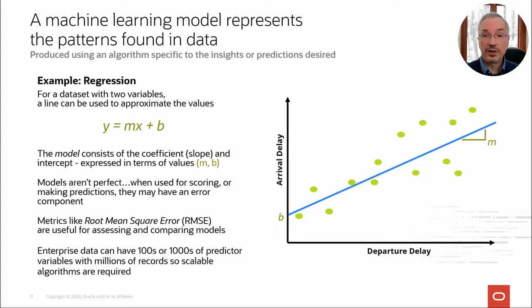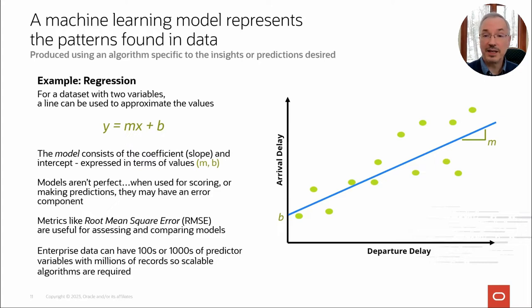Models often contain metadata like the names of variables and model quality metrics. Minimally, these values M and B could be stored in a file and handed off to some scoring code that can predict arrival delay given a departure delay. With Oracle Machine Learning, models aren't stored in flat files but as first-class database schema objects — just like your data, your model has database-level security and governance.